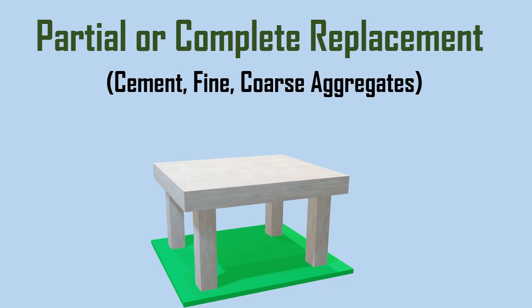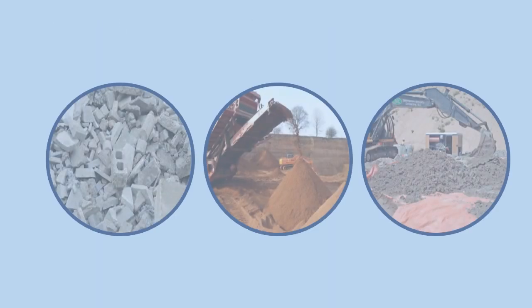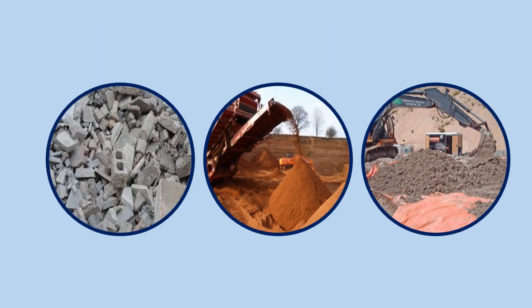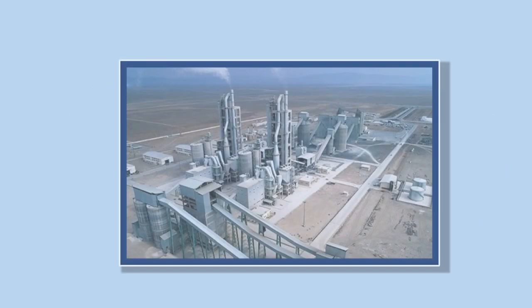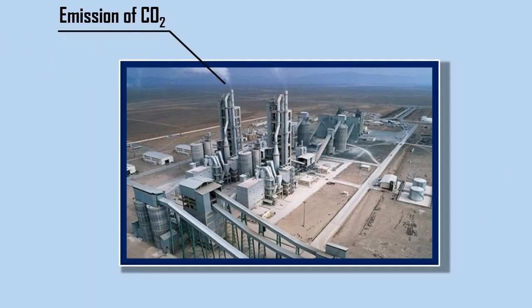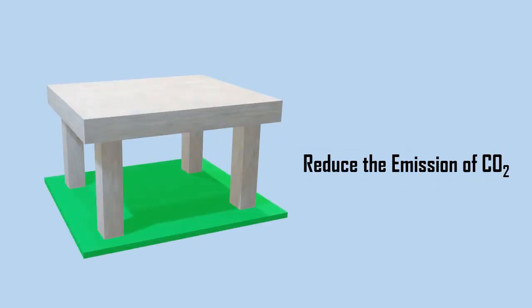The substitution materials can be waste or residual products from the manufacturing process. As the manufacture of cement involves the emission of large amounts of CO2, which is harmful to the environment, green concrete is being used to reduce the emission of CO2.